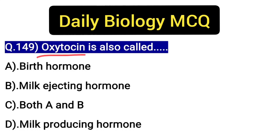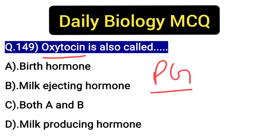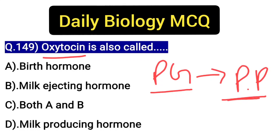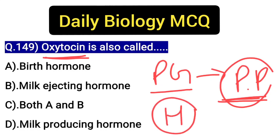They both involve oxytocin hormone because it works in both processes. Now, oxytocin hormone is released from the posterior pituitary gland, as we saw in the last MCQ. What was the other name of the posterior pituitary gland? Now, if you ask where oxytocin hormone is synthesized, then you have to answer hypothalamus, as given in NCERT.